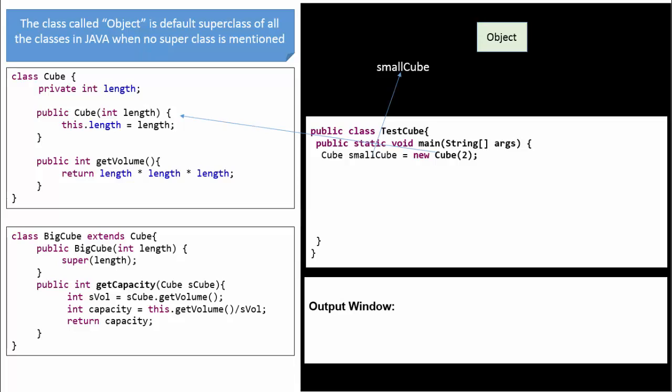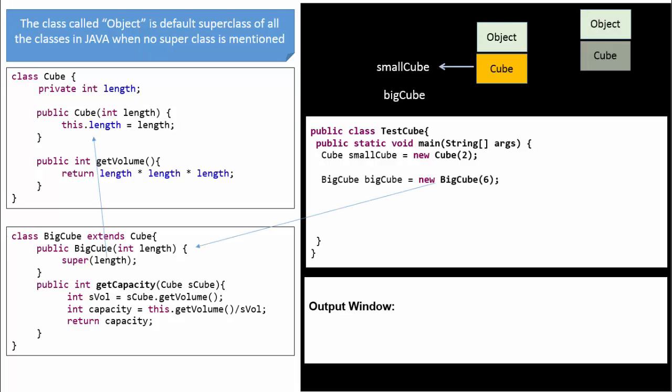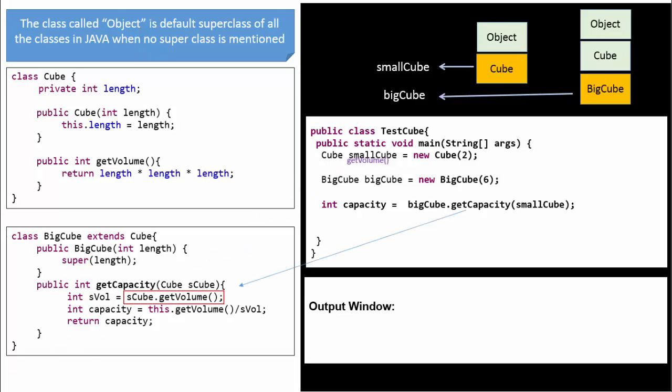A class called object is default superclass of all the classes in Java when no superclass is mentioned. So its instance is created always first. Thus, every child will have members from its parental hierarchy.